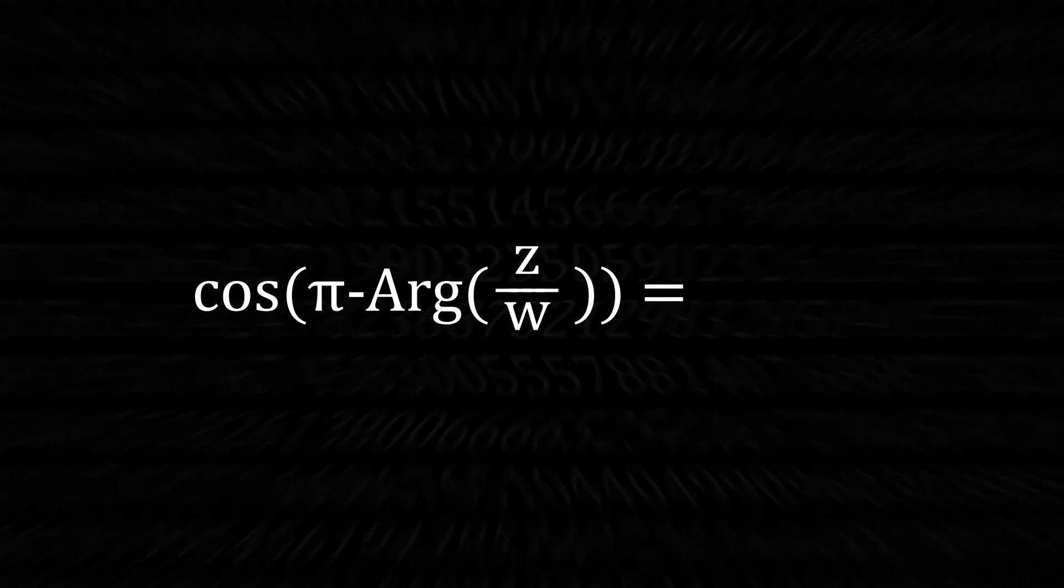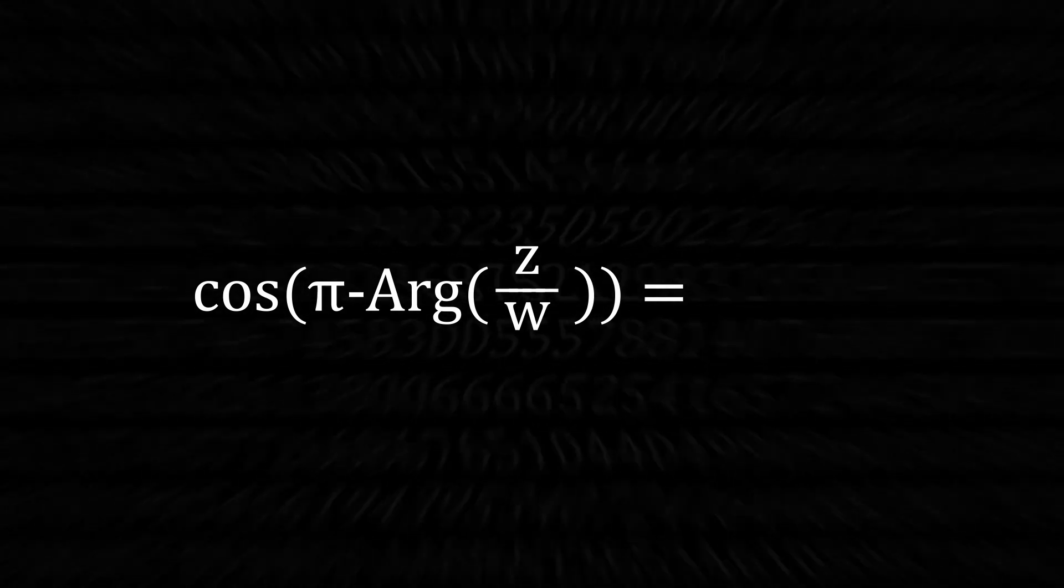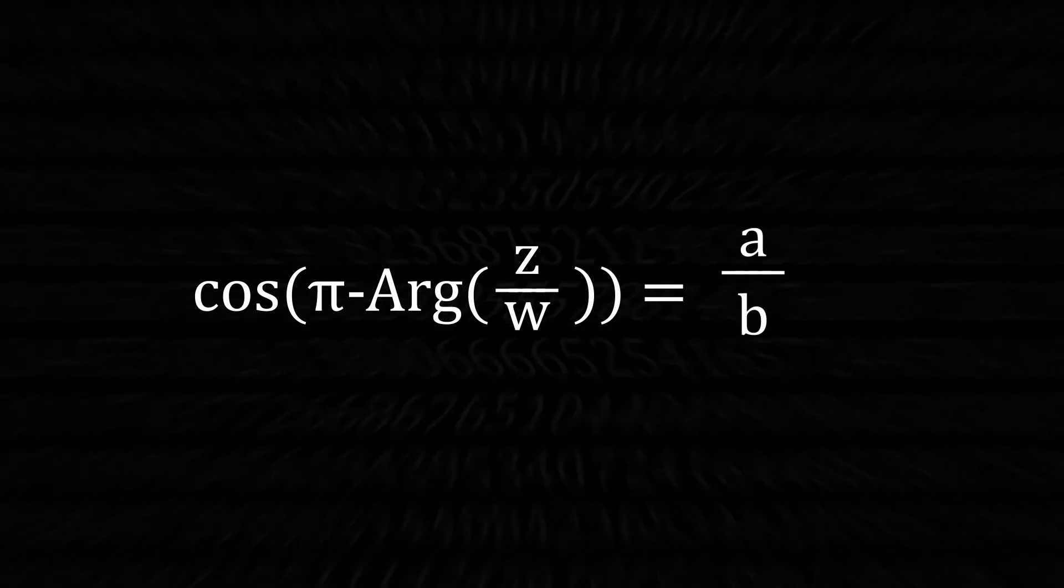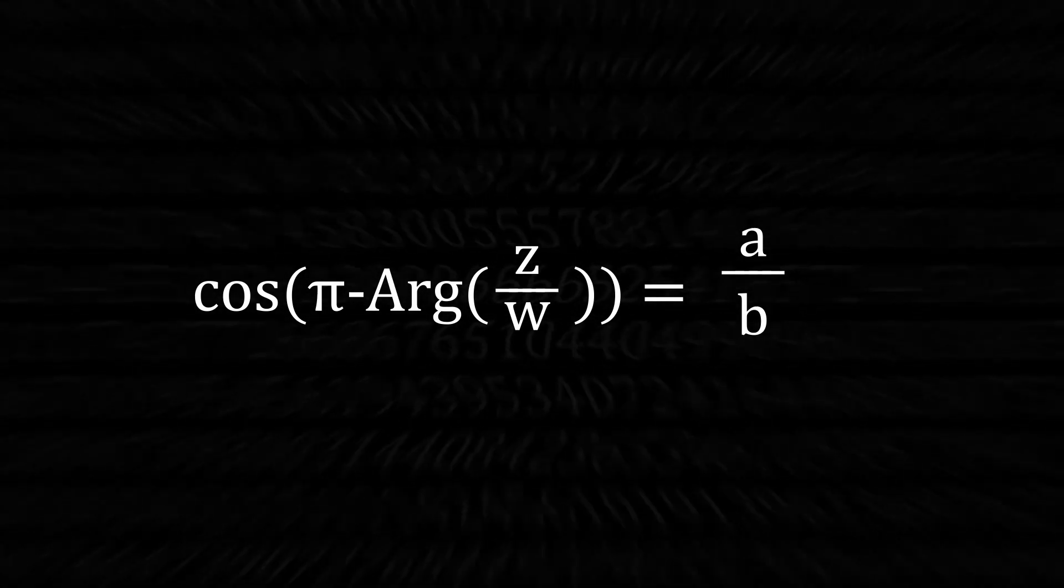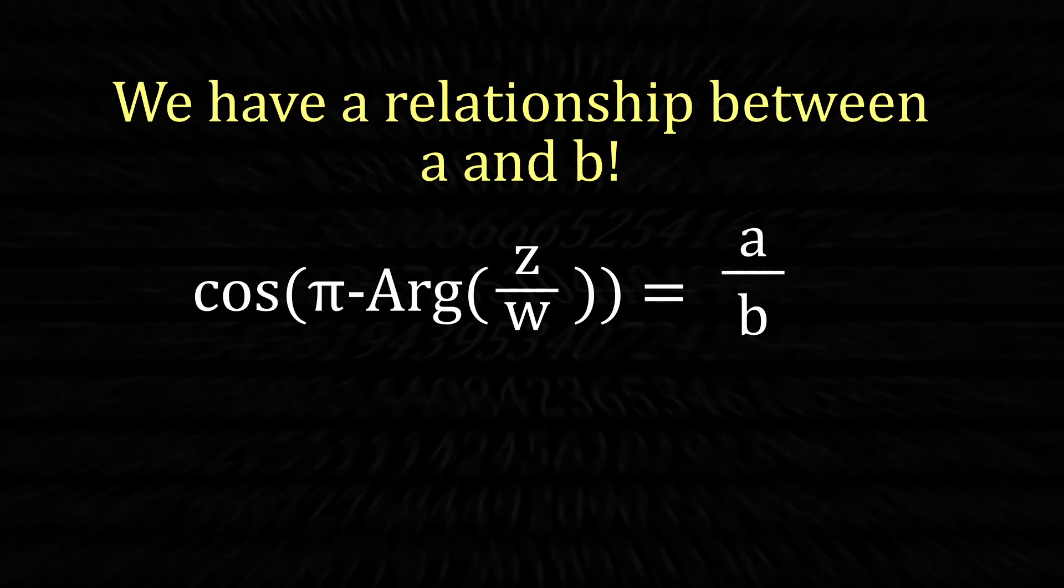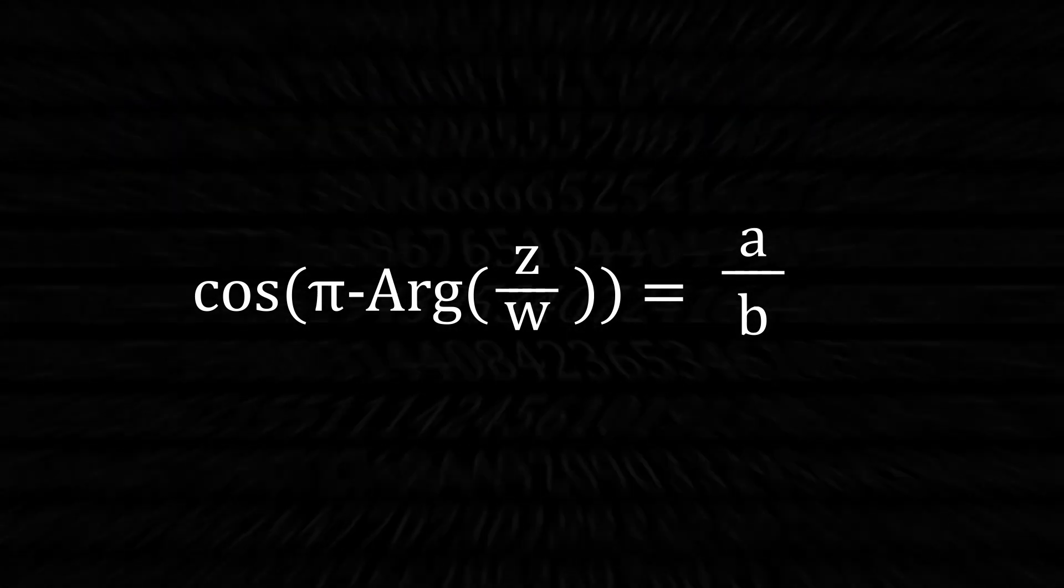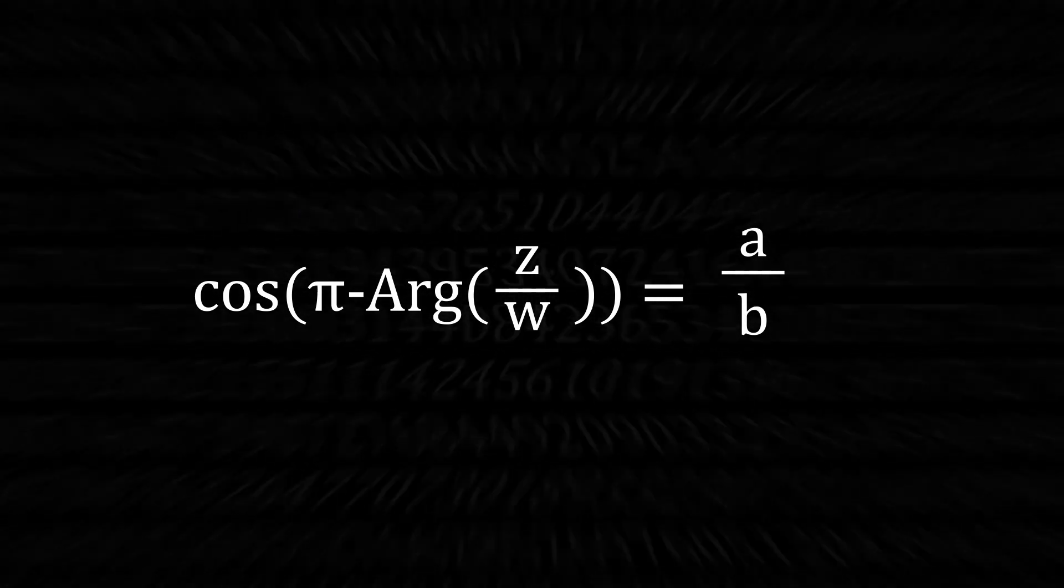Let's take the cosine of this angle. We know that it equals the ratio of the adjacent side to the hypotenuse, or a divided by b. We're getting really close. We already have a clear relationship between a and b. All we need is to simplify the equation.